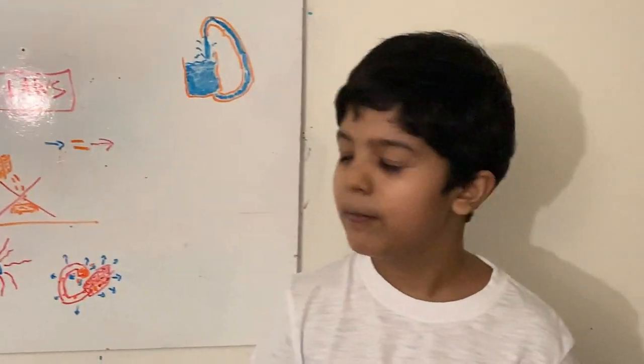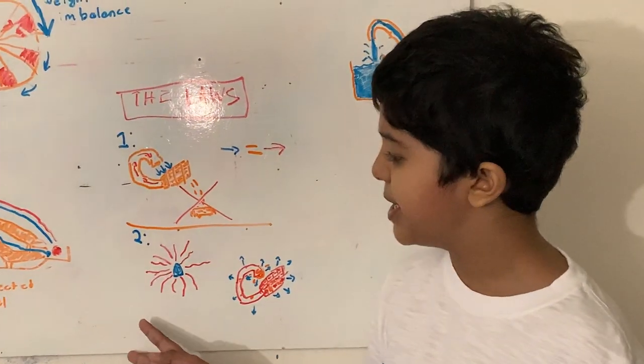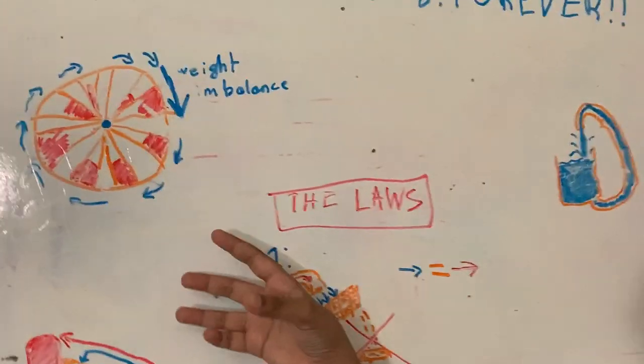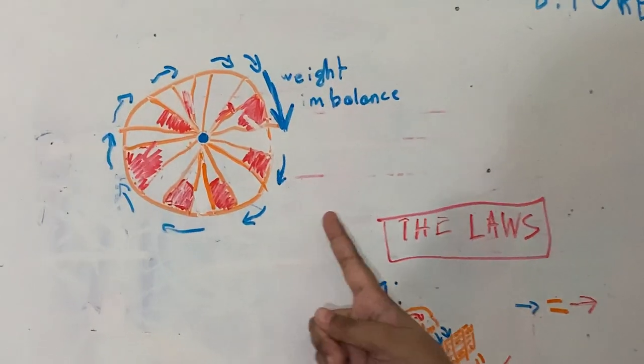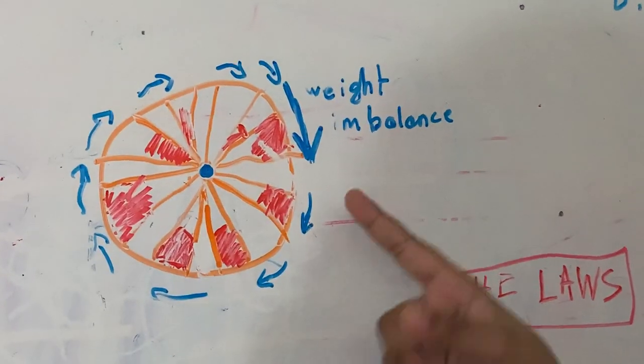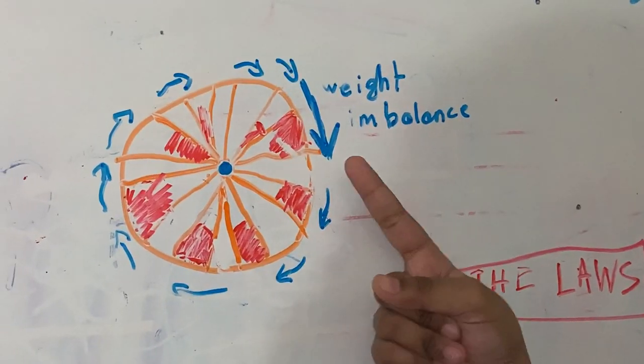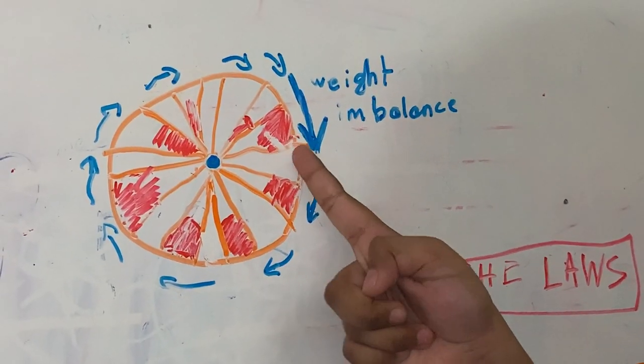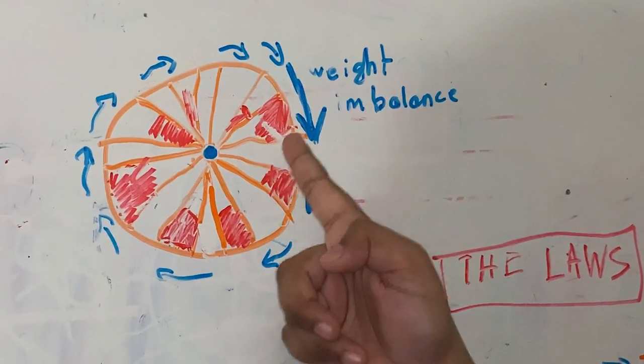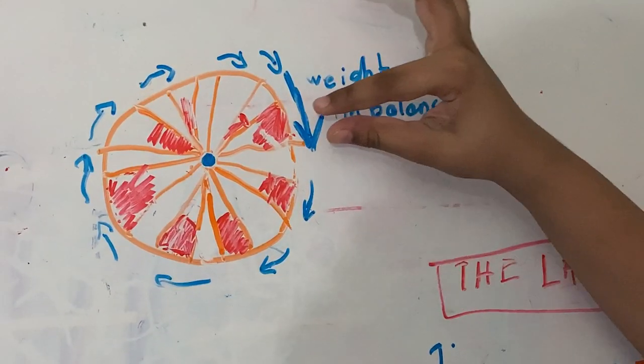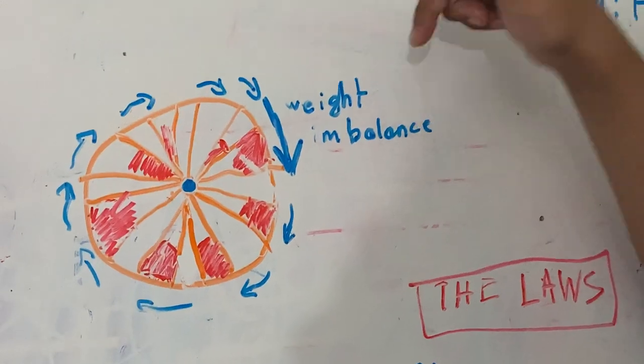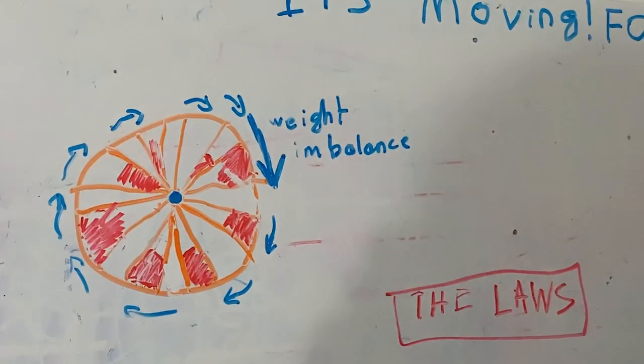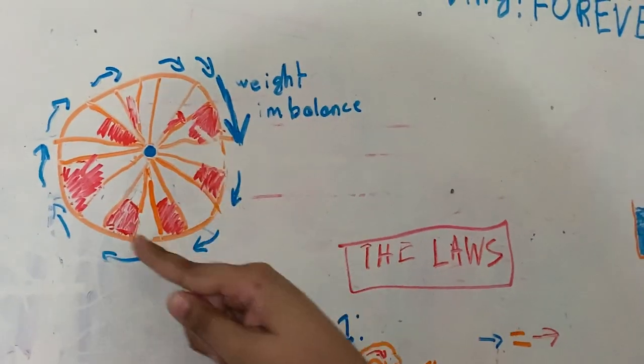An example of a perpetual motion machine is this wheel. It has mercury inside of it, so in every little compartment the mercury is there. Everything has the same amount, but here the mercury has to go that way, near the end. That causes a weight imbalance, which makes the wheel go down, and that makes the entire wheel spin.